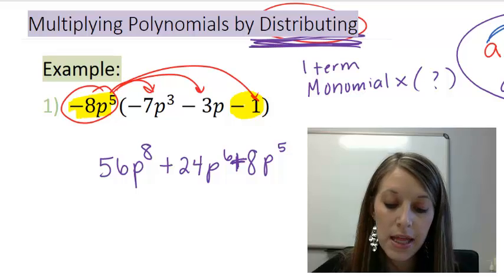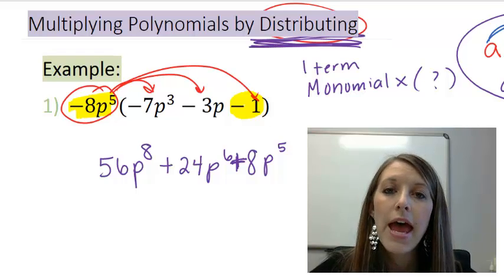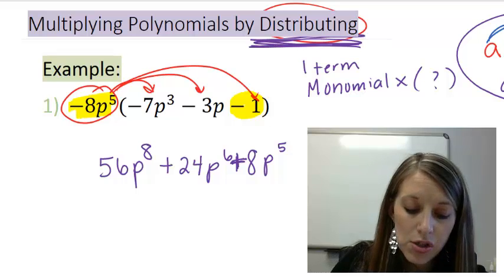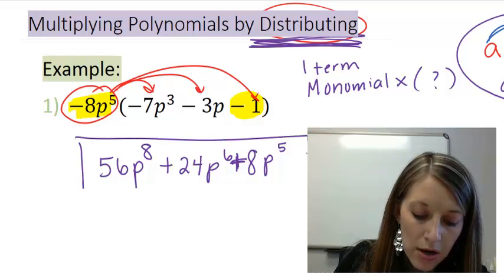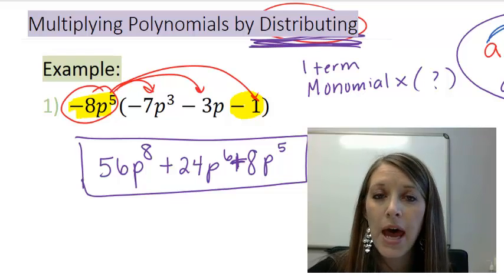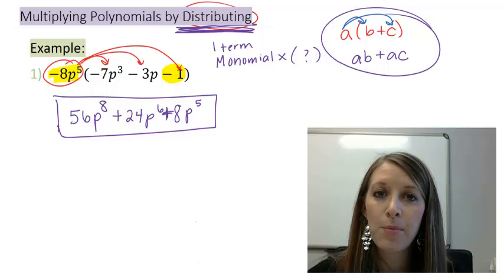Confirm that you are still in descending order, which you should be if it starts out that way, and confirm that you don't have any like terms that you can combine at this time. And we don't. So we have distributed our negative 8p to the fifth through, meaning we have multiplied these two polynomials. So we've just worked through an example of multiplying polynomials using that keyword distributing.